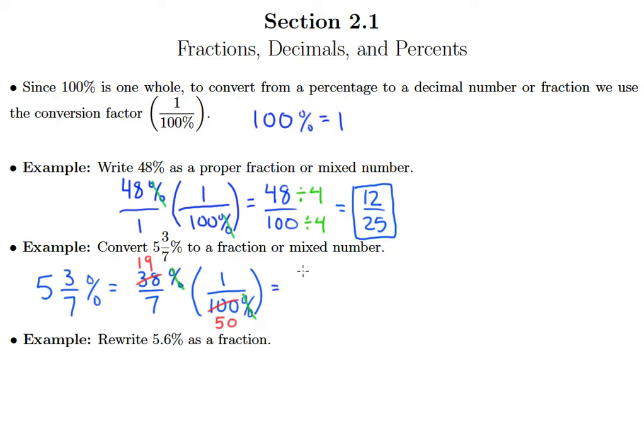So on top, I have 19 times 1 is 19, and 7 times 50 is going to be 350. And since I know 19 has nothing in common with 7, and nothing in common with 50, because 19 is a prime number, my answer here is 19 over 350.